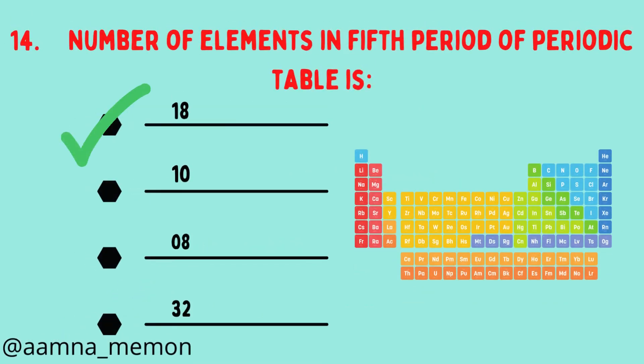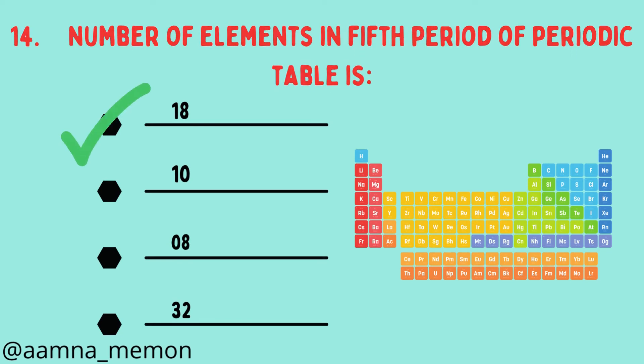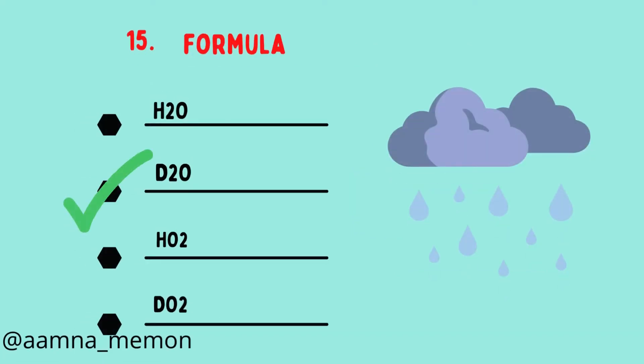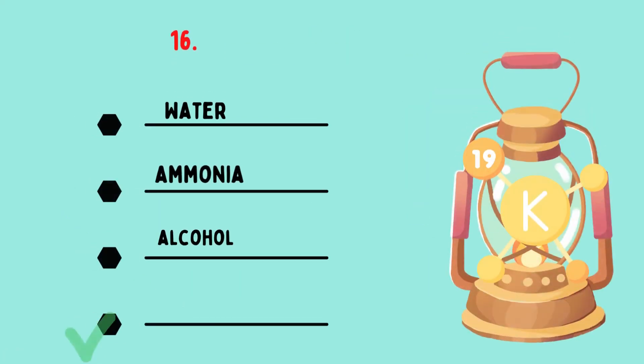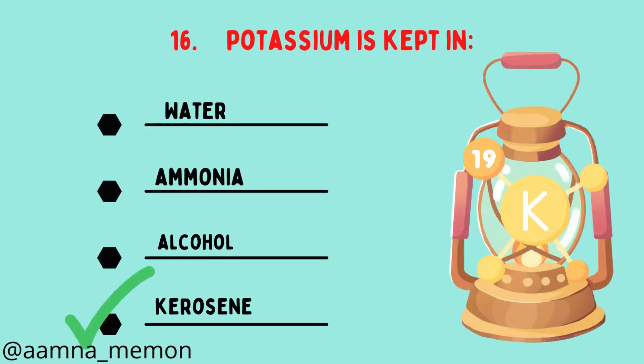The number of elements in the fifth period of the periodic table is 18. The formula of heavy water is D2O. Potassium is kept in kerosene.